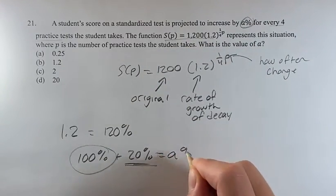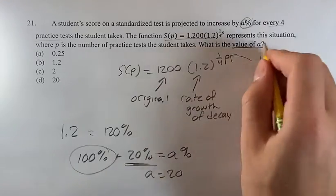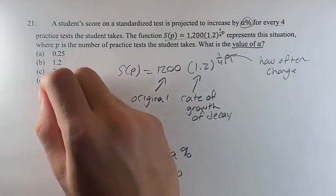So 20% is equal to a%. A is equal to 20, which is what we're looking for here. A is equal to 20 is going to be our answer.